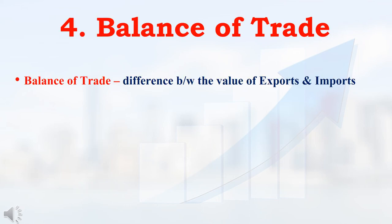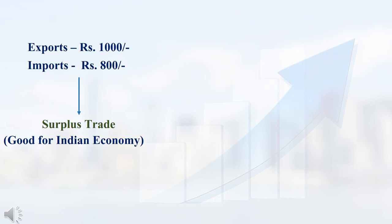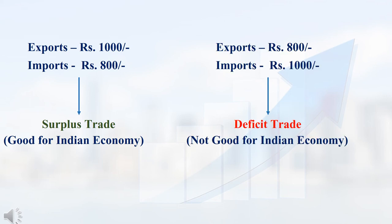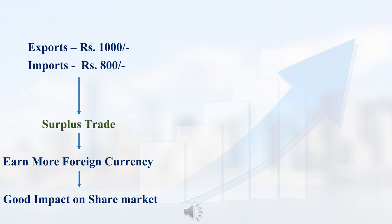In economy analysis, the next parameter is balance of trade. Balance of trade means the difference between the value of exports and imports. For example, in India if totally 1000 rupees worth of products are exported and 800 rupees worth are imported, this is called surplus trade or positive balance of trade — and if surplus trade happens, that will be good for the Indian economy. Suppose in India if 800 rupees worth of products are exported and 1000 rupees worth are imported, this is called deficit trade or negative balance of trade — and if deficit trade happens, that is not good for the Indian economy.